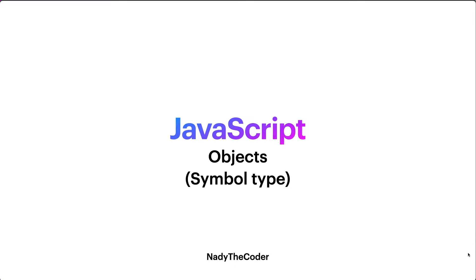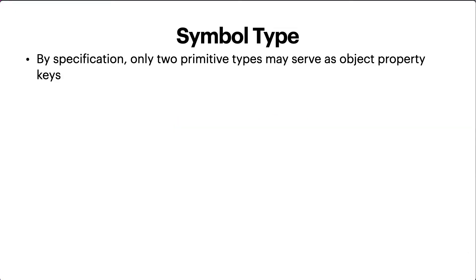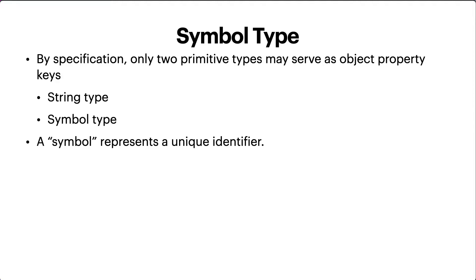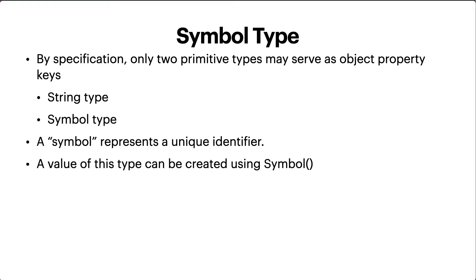By specification, only two primitive types may serve as object property keys. One is the string type, the second one is the symbol type. So let's say we have an object — the key we were using until now was basically the string. The other type we can make use of as a key of a property could be a symbol type. Otherwise, if one uses another type such as number, it is auto-converted to string.